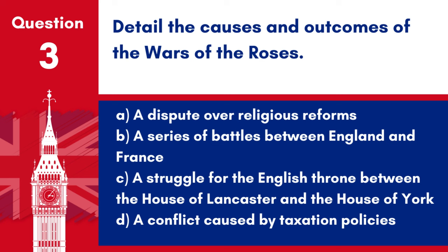Question 3: Detail the causes and outcomes of the Wars of the Roses. a. A dispute over religious reforms. b. A series of battles between England and France. c. A struggle for the English throne between the House of Lancaster and the House of York. d. A conflict caused by taxation policies. Answer: c. A struggle for the English throne between the House of Lancaster and the House of York. The Wars of the Roses were a series of civil wars fought over control of the English throne, with the House of Lancaster, represented by a red rose, and the House of York, represented by a white rose, as the main contenders.